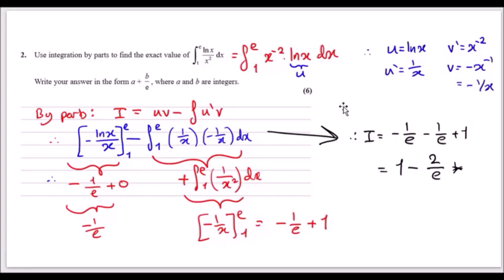For the integral of 1/x², integrating gives −1/x. Evaluating from 1 to e gives −1/e + 1. Adding everything together: −1/e plus (−1/e + 1) simplifies to 1 − 2/e.